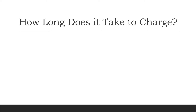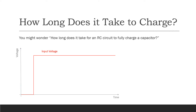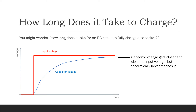How long does it take to fully charge a capacitor? Imagine you had an RC circuit and the input voltage looks like what's shown in red here — it starts off at zero and then jumps up to a new value. The capacitor voltage would start charging quickly, but the closer it got to the input voltage, the slower it would charge. Since it keeps going slower and slower the closer it gets, in theory it would never actually reach the input voltage — it would take infinitely long to fully charge.